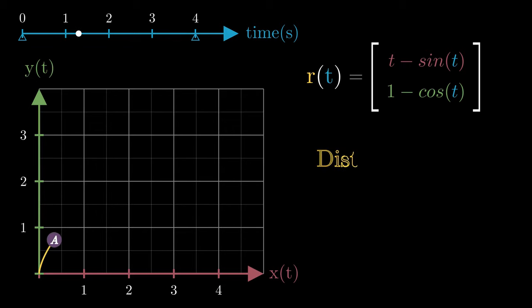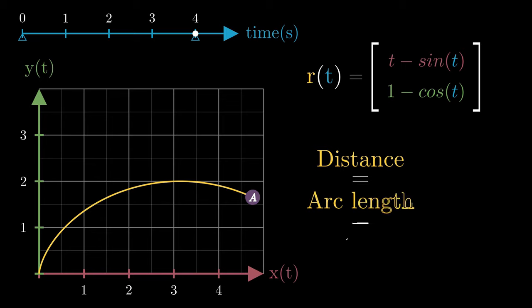Now the question is, what is the distance travelled by particle A in these 4 seconds? Or in other words, what is the length between the endpoints along this curve?